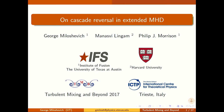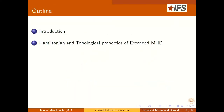My name is George Milosevic. I'm a graduate student at University of Texas at Austin and my advisor is Philip J. Morrison. This work has been done in collaboration with him and his former student Manas Willingham, who is at Harvard University right now. It's called 'On Cascade Reversal in Extended MHD.' The audience will be briefly introduced to extended MHD, its Hamiltonian topological properties, and then we will start talking about turbulence flux transfer rates and direction of cascades in 3D and 2D turbulence.